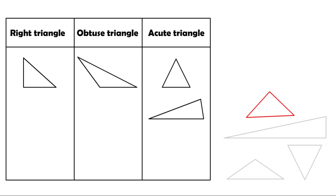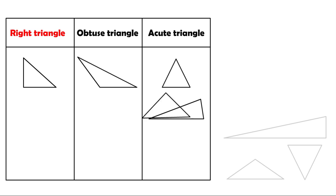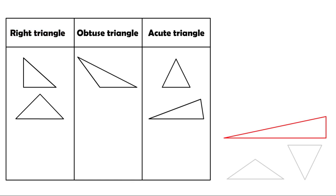This might be hard to see, but it is a right triangle. We can use our right angle model to double check that this angle is indeed a right angle. This one is a right triangle as well.